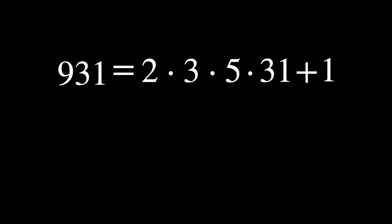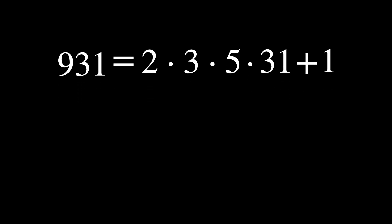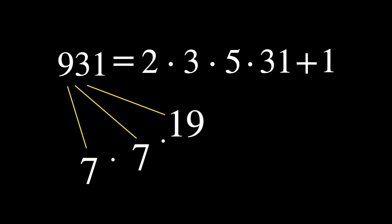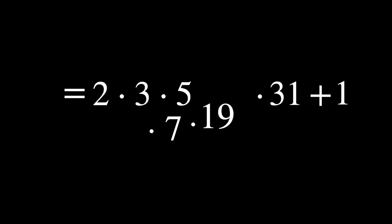Now we have a new set. This generates the number 931, which is not a prime number. But it can be broken down into the primes 7 times 7 times 19, both of which are not on the list and must be added to it.